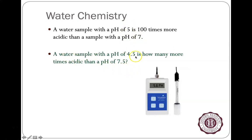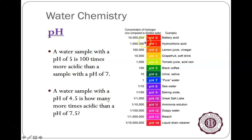A water sample with a pH of 4.5 versus a pH of 7.5 — that's a 3-unit difference. A 3-unit pH change equals 10 × 10 × 10 = 10³, so that sample is a thousand times more acidic.